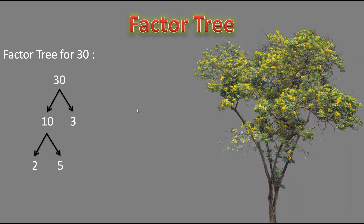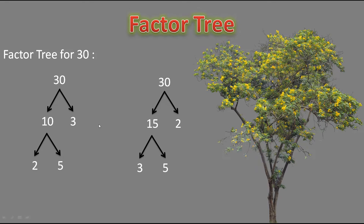Let's try another way using 15 times 2 instead of 10 times 3. We write 30, give two branches, and write 15 and 2. Since 15 is composite, we split it further, and at the tip of its branches we write 3 and 5, since 3 times 5 equals 15. Both 3 and 5 are prime, so we stop. We get the same prime factors: 2, 3, and 5. So the prime factorization of 30 is 2 multiplied by 3 multiplied by 5.